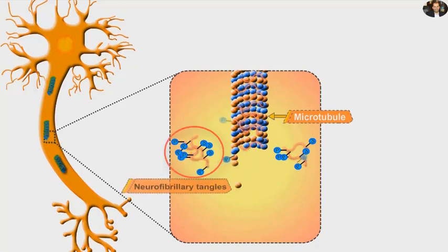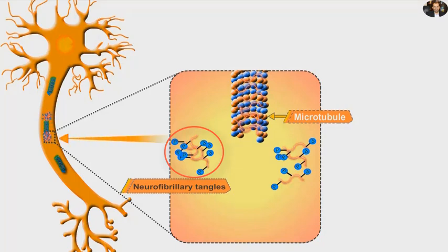The hyperphosphorylated tau protein aggregates to form new pathological structures called neurofibrillary tangles, which distribute throughout the nerve cells.